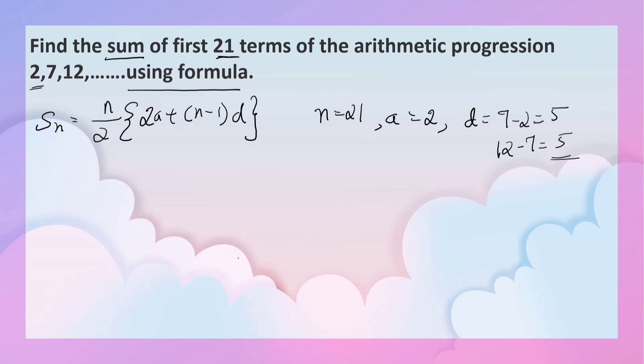Now, let us substitute the values in the formula to get the sum of 21 terms. n is 21 by 2, 2 into a is 2 plus n is 21 minus 1, d is 5.